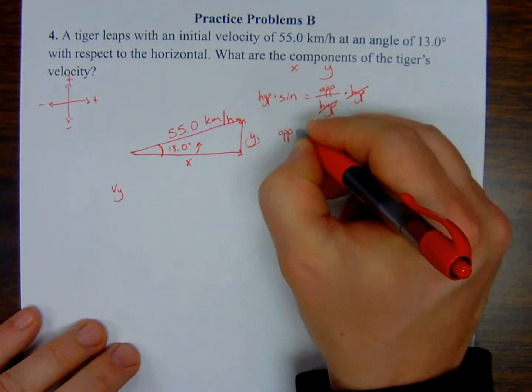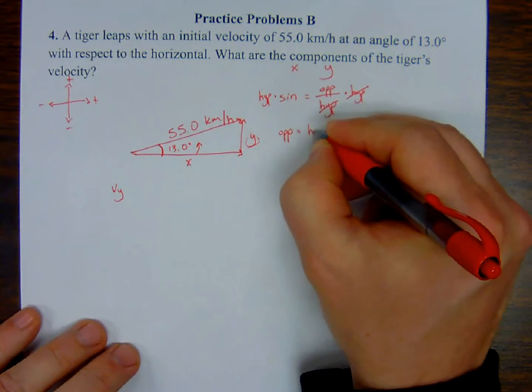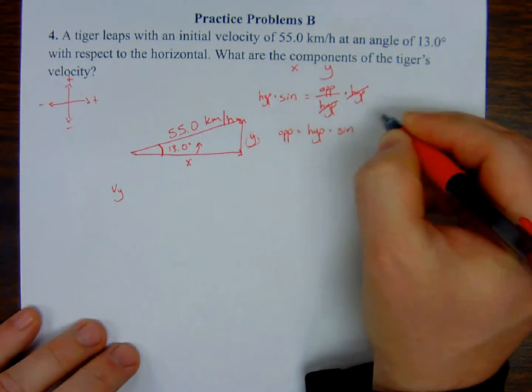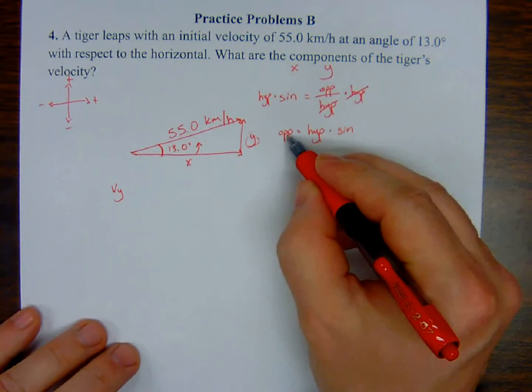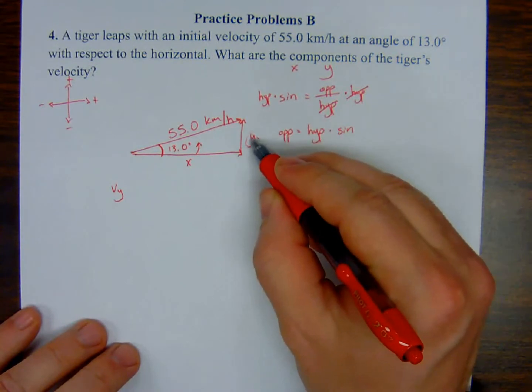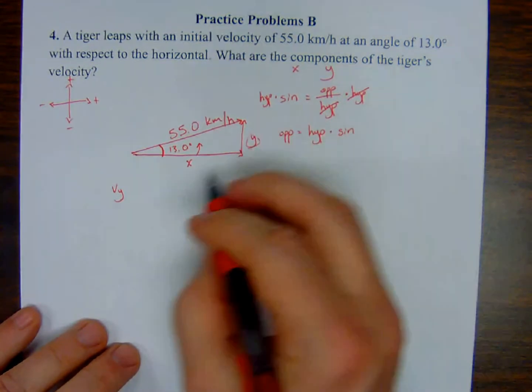The opposite is the velocity in the y component. Velocity in the y component. Hypotenuse is the resultant, and then I take the sine of the angle.